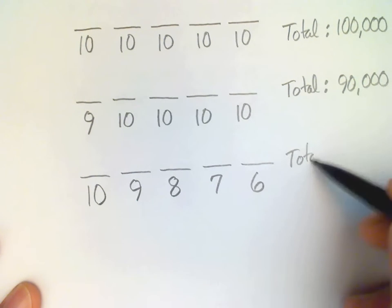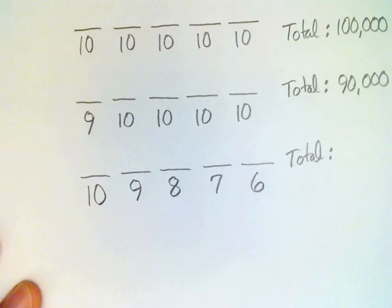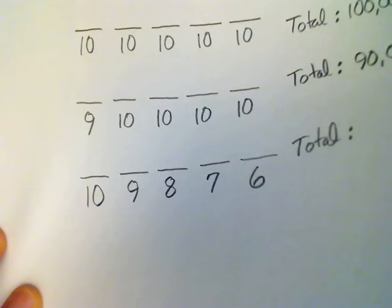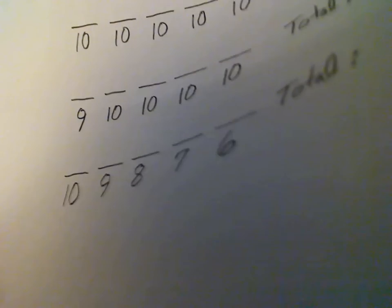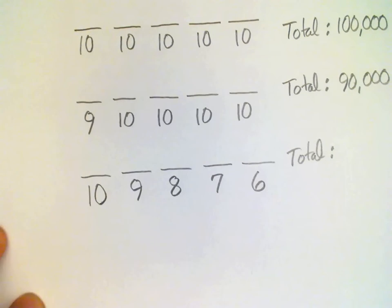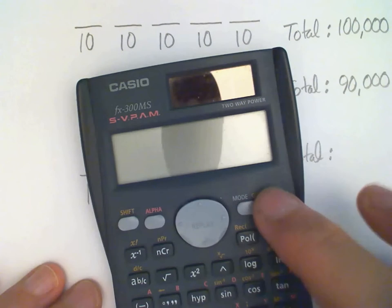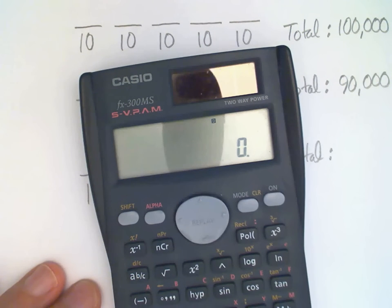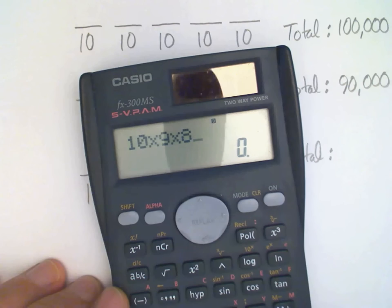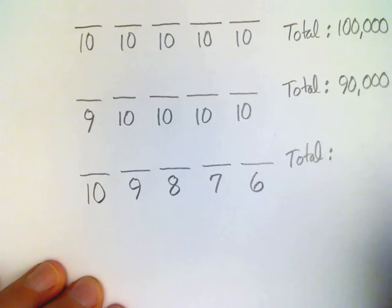Now if we multiply these together, I've got my calculator here that'll help us. Ten times nine times eight times seven times six - the answer is thirty thousand two hundred forty.